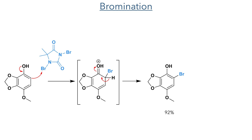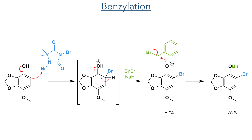In the next reaction the position ortho to this phenol was brominated using N,N-dibromodimethylhydantoin, which reacts similarly to NBS and is a source of electrophilic bromine. This undergoes an electrophilic aromatic substitution with the ring and produces the monobrominated product in high yield. With this in place, the phenol was then benzylated using benzyl bromide and sodium hydride.